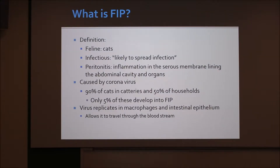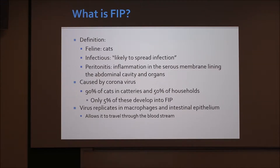This disease is caused by the coronavirus. It affects 90% of cats in catteries and 50% of household cats, and only 5% of these actually develop into FIP. This virus works by replicating in the intestinal epithelium and macrophages. By replicating in macrophages, it allows it to travel through the bloodstream to outside tissues, where it can spread, recruit more antibodies, and travel to more macrophages. So it's a pretty efficient virus in that way.